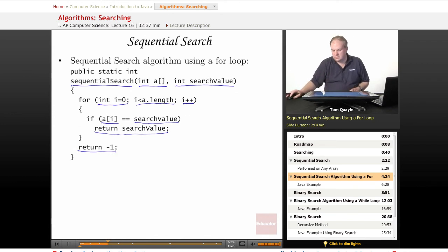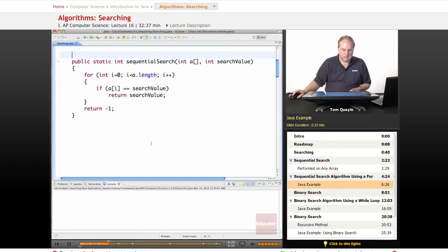Let's take a look at how we would implement this in a real Java program. Here is the same sequential search logic using the for loop from 0 to less than the length of the array. And it's exactly the code that we saw in the previous slide. If I find the search value in position i, I return it. If I get to the end of the loop and I haven't found it yet, then I'm going to return negative 1.